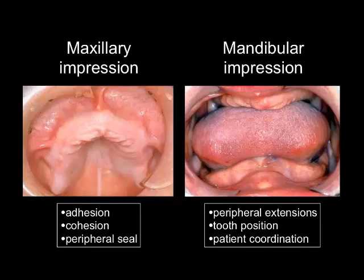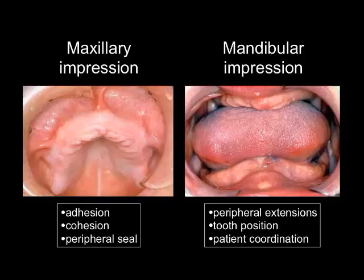The mandibular denture, because there's an obstacle called the tongue, we really have to work on the peripheral extensions, understand the physiology, and make sure we don't have overextensions. We've got to understand where teeth should be properly positioned over the ridge, because that could be a very destabilizing factor to the lower denture.